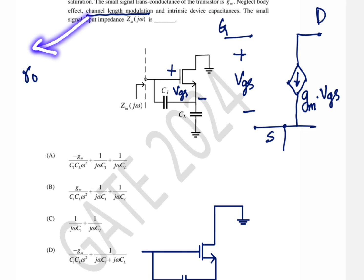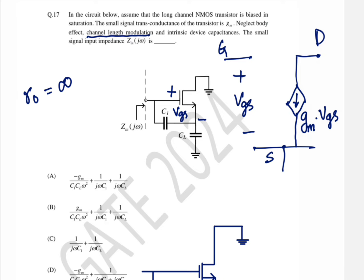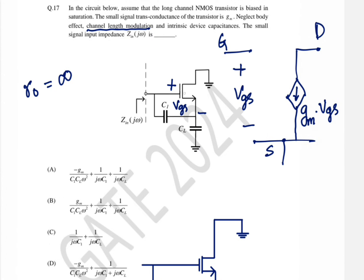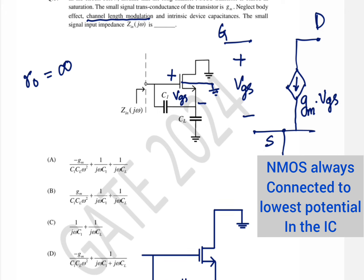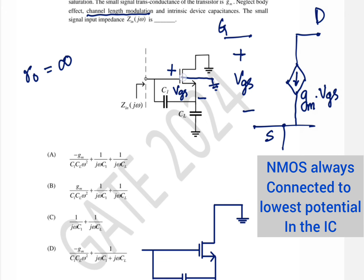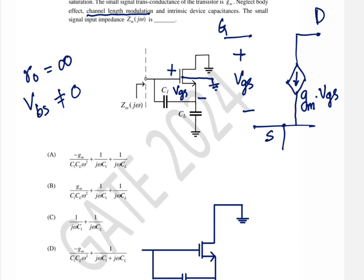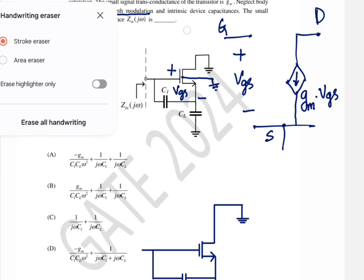Since there is no channel length modulation, the output impedance of this MOSFET will be infinite. Also, since there is no body effect, the body will be connected to the lowest potential in the circuit — which is ground. There is a voltage from body to source, but we can ignore this body effect part.